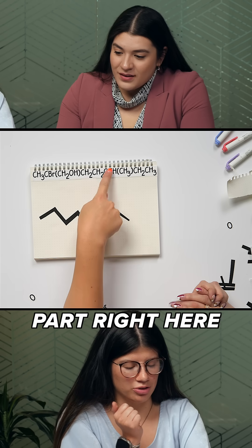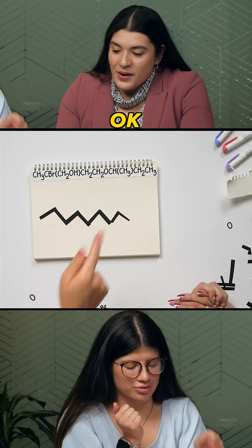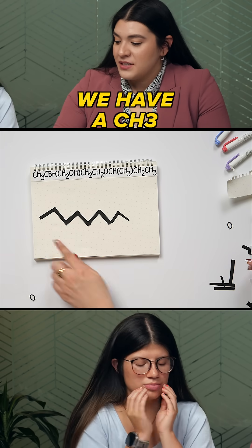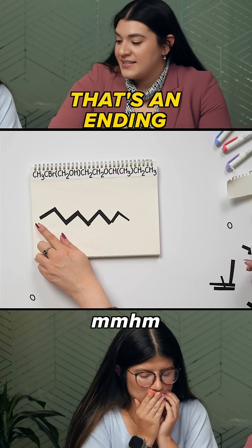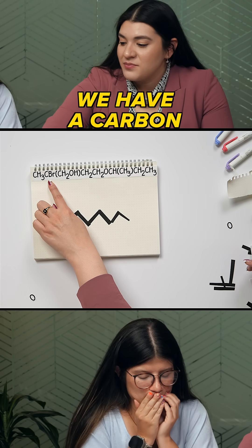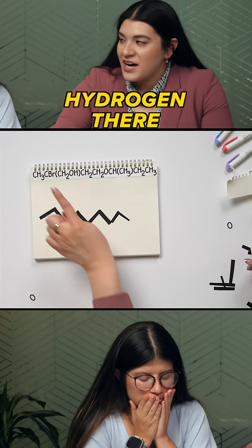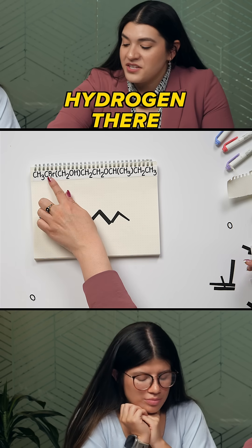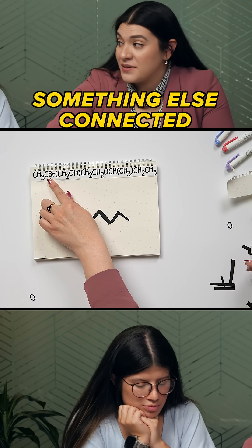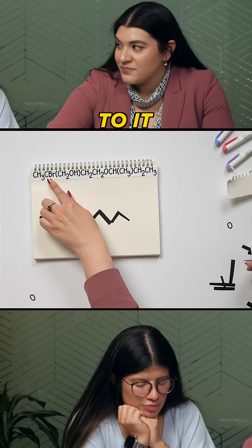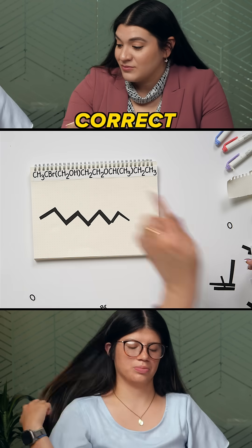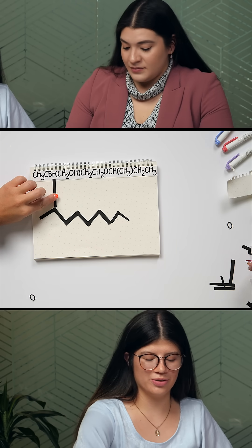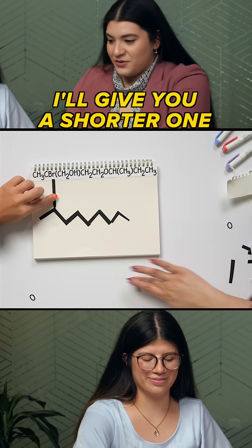I'm caught up on this part right here. So we have a CH3 — that's an ending. We have a carbon, but there's no hydrogen there. So if there's no hydrogen there, then there has to be something else connected to it. The bromine. Correct. So that would be where we bring the bromine in.